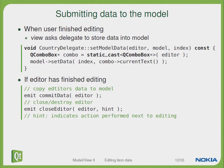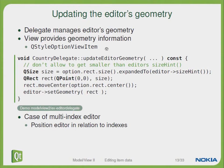You can also specify a hint about what has to be done next. For updating the editor's geometry — how can the delegate manage it? We have the updateEditorGeometry function where you can set the correct geometry of your editor. In the case of a multi-index editor you can position the editor in the correct relation to your indexes.